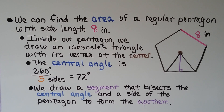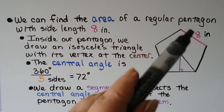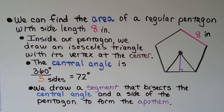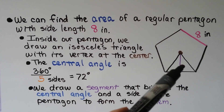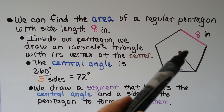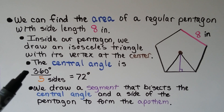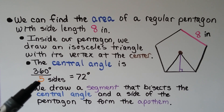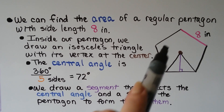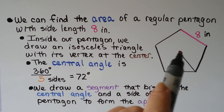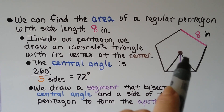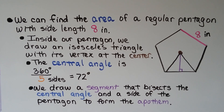We can find the area of a regular pentagon with five congruent sides, each eight inches long. Inside the pentagon, we draw an isosceles triangle with its vertex at the center. The central angle is 360 degrees divided by five sides, which is 72 degrees. We draw a segment that bisects the central angle and a side of the pentagon to form the apothem, giving us two angles of 36 degrees each.